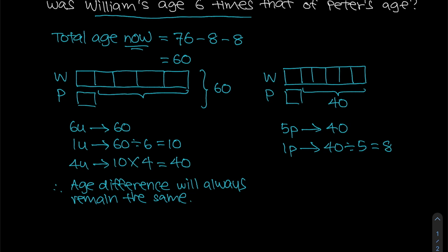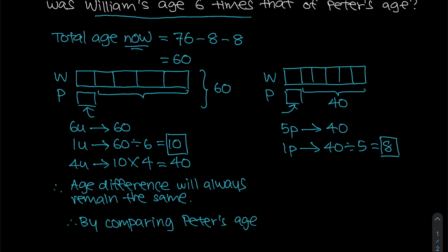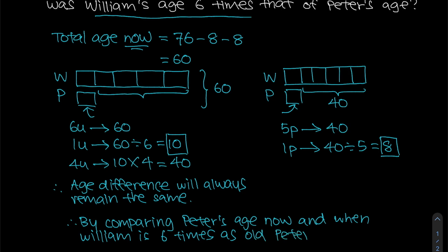Notice that one unit on the left model gives Peter's current age as 10, while one part on the right model gives Peter's age as 8 when William is six times as old. By comparing Peter's age now versus when William is six times as old as Peter, we can find how many years ago that was.